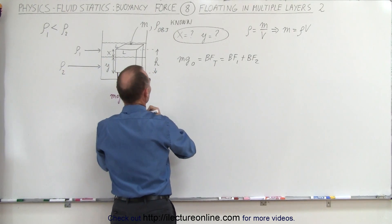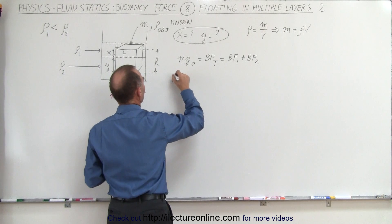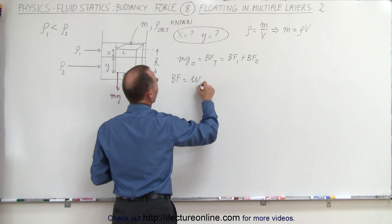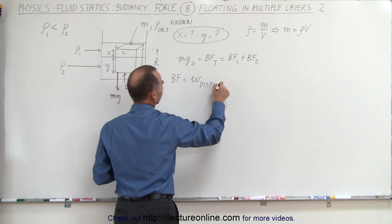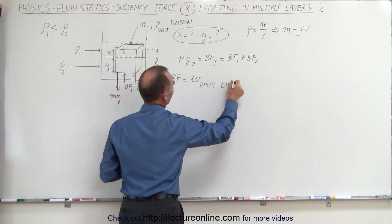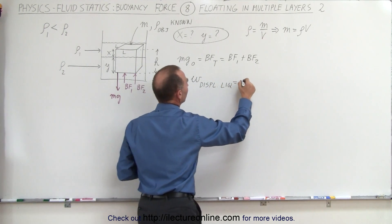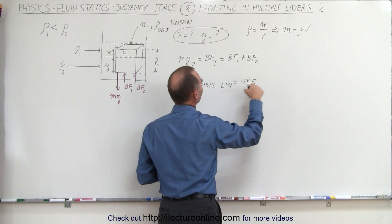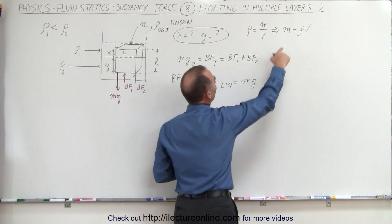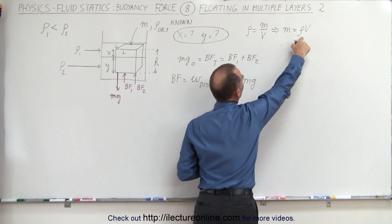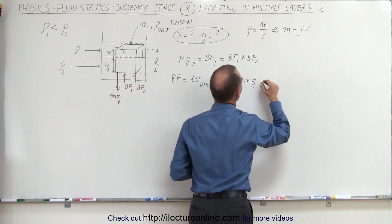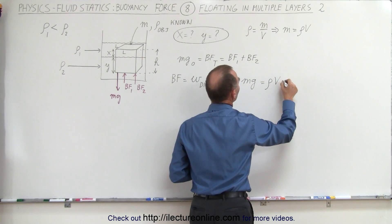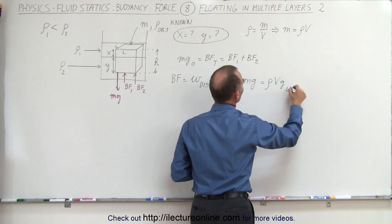Remember, the definition of buoyancy force is that it is equal to the weight of the displaced liquid, which is equal to mg of the liquid. Weight is equal to mass times acceleration due to gravity, and the mass can be written in terms of the density and the volume, so this is equal to the density times the volume times g of the liquid.